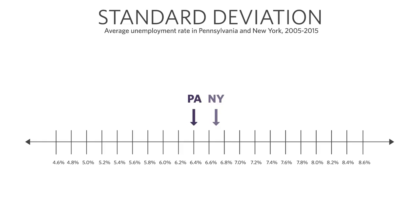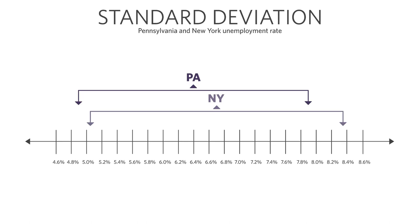So what I've said now are two apparently contradictory things. The first is that the average unemployment rate in Pennsylvania is 6.4% and the average in New York is 6.7% — so the average in Pennsylvania is lower. The second, which kind of sounds like it contradicts that, is that when you account for the variation in the unemployment rates, there isn't much difference between them at all.